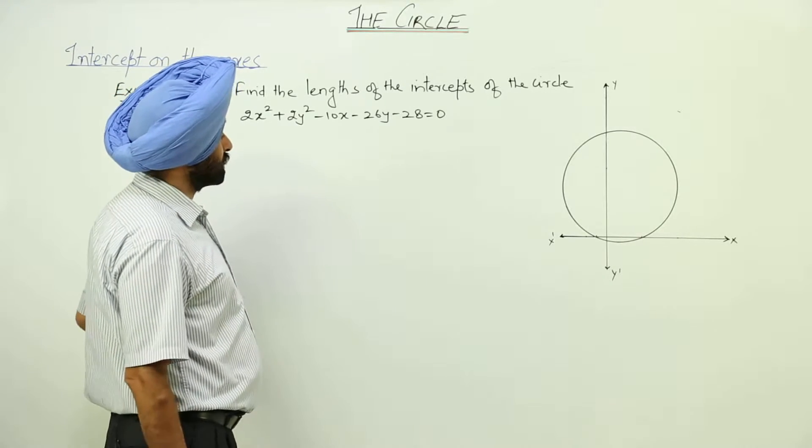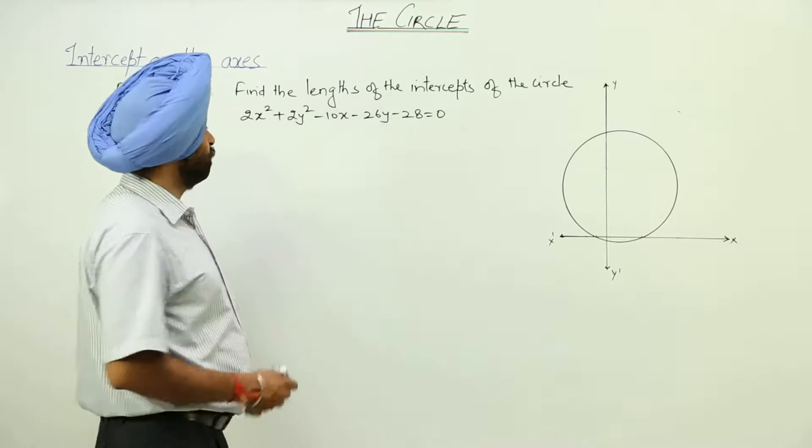We have to find the length of the intercepts of this circle when the equation is given to us. What is the first step?